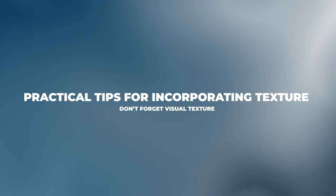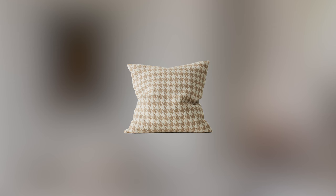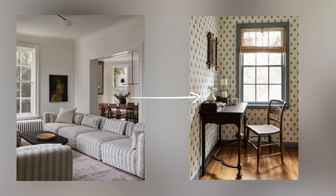Consider how you can contrast patterns against plain surfaces. Incorporating patterns is the easiest way to create the illusion of texture. This can range from something as simple as a cushion, throw, lampshade, or upholstery, all the way to wallpaper and tiles.